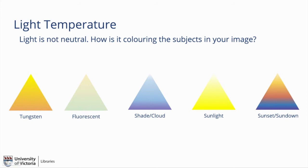Light can change color if it's filtering through something such as a red patio umbrella, or bouncing off an object before hitting your subject — such as a green wall. If you have somebody standing next to a green wall, the light bounces off and they're going to appear green on that side. Too many light sources can result in mixed lighting, which is usually unflattering.